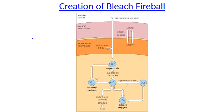Neutrophils really excel at respiratory burst. Macrophages are capable of it, but neutrophils are the main offenders. At its heart, oxidative burst results in the production of nitric oxide and reactive oxygen species — chemically unstable molecules that contain oxygen — such as superoxide anion and hydrogen peroxide.